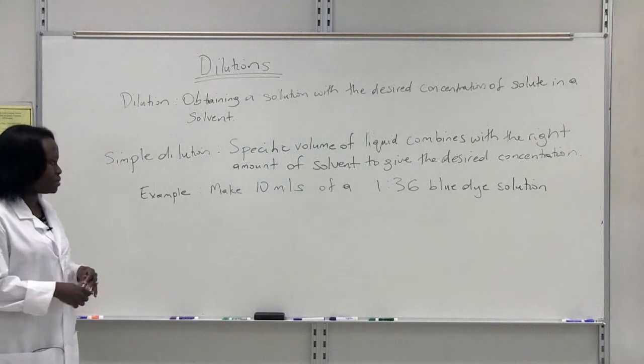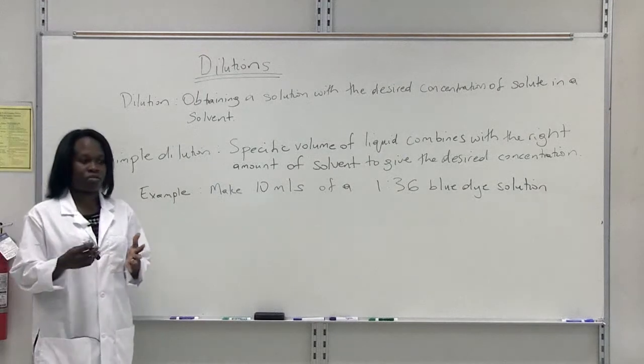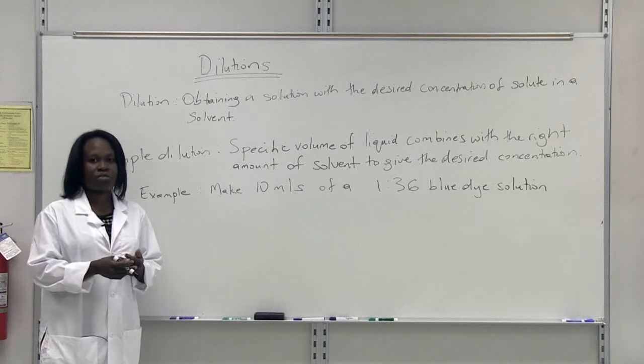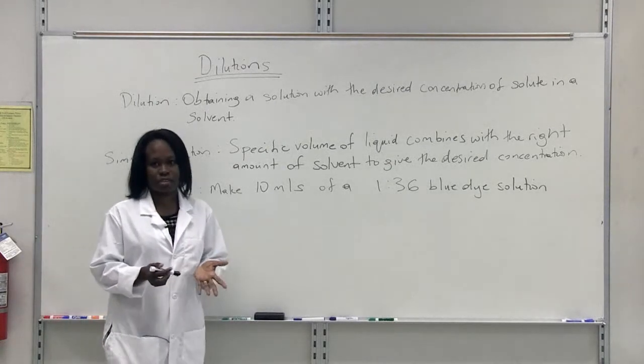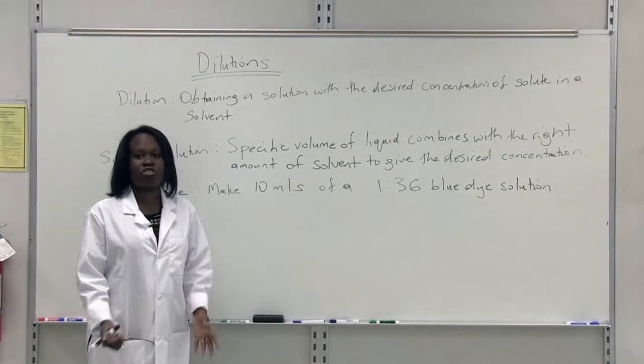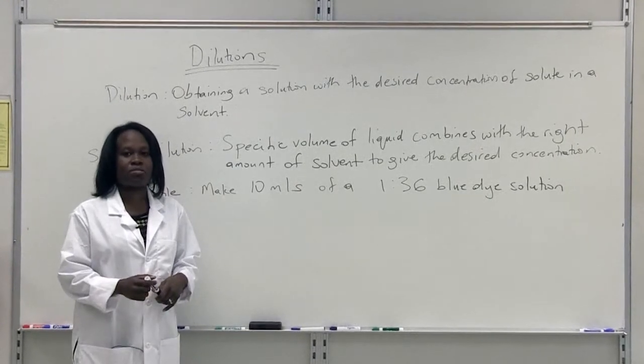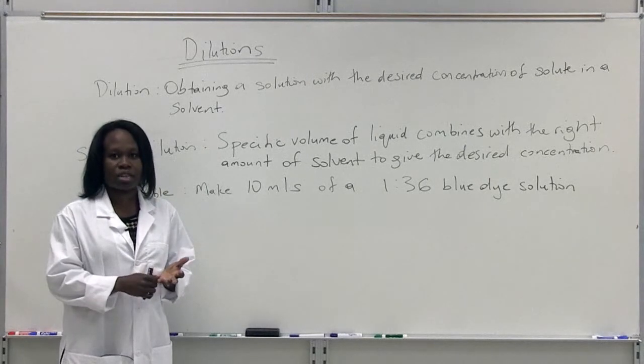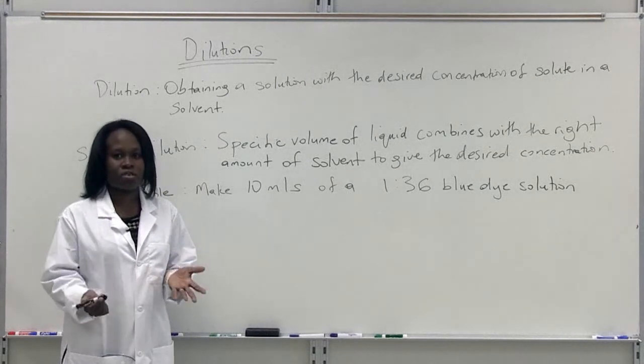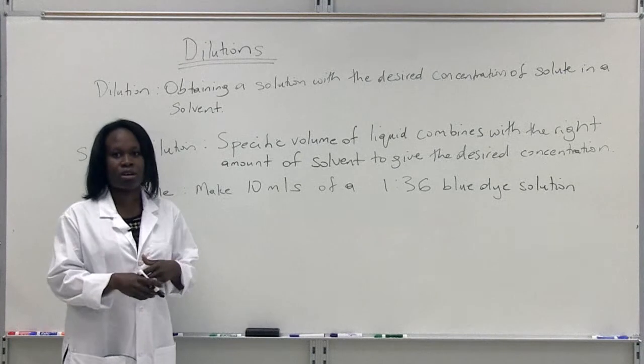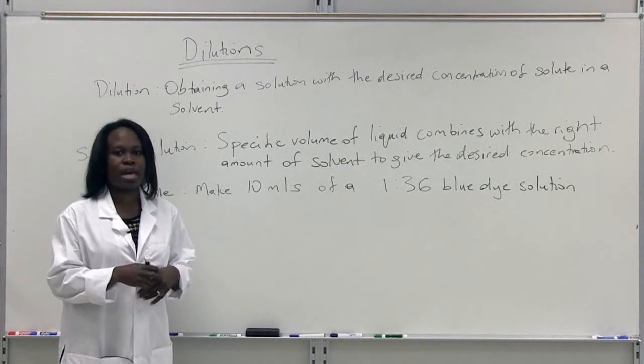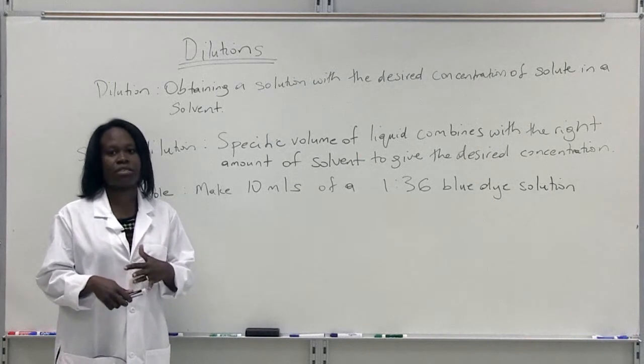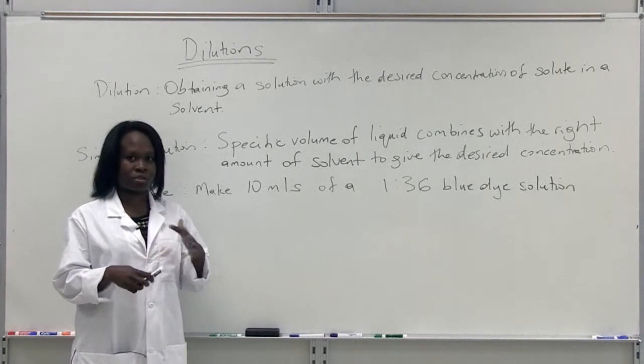Here's a practical example in terms of you using dilutions in the household. If you were to make lemonade and you added too much sugar to your lemonade, you want to make it a desired concentration so that it doesn't have too much sugar. One way of doing this is to make up a dilution. You can dilute your lemonade by adding more water to it so that your resulting solution will be more dilute, and as a result you have less sweetness.